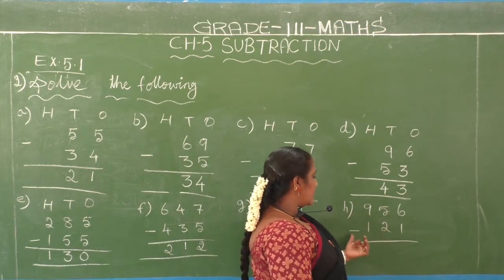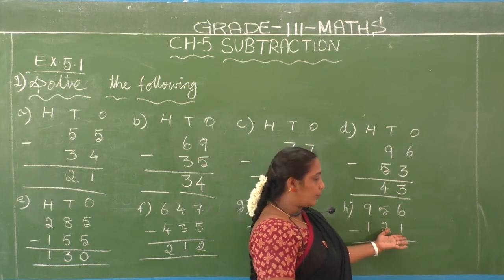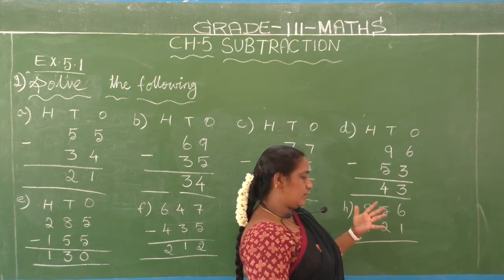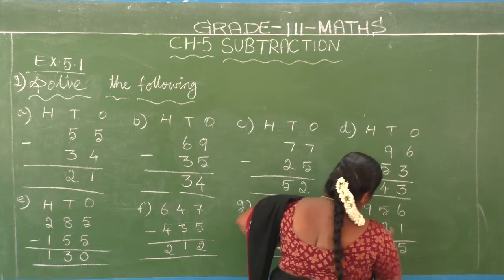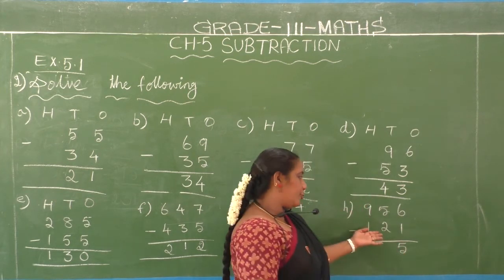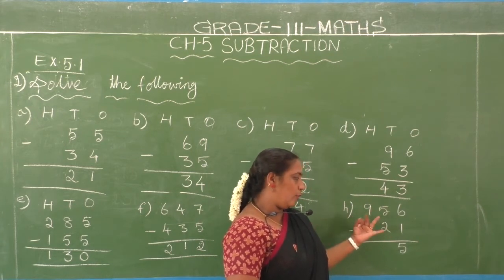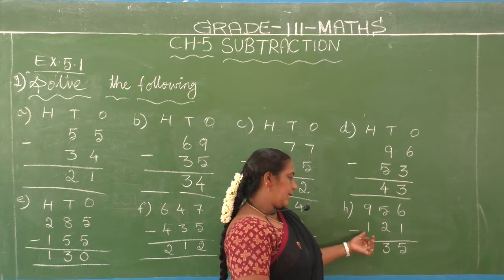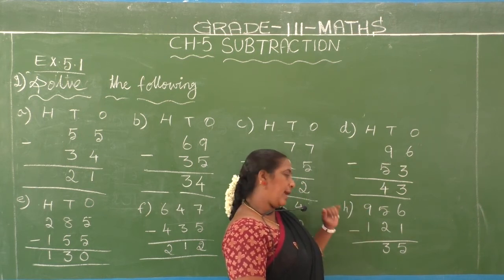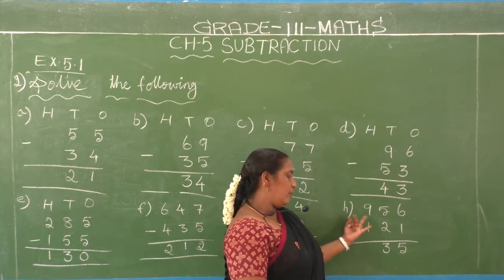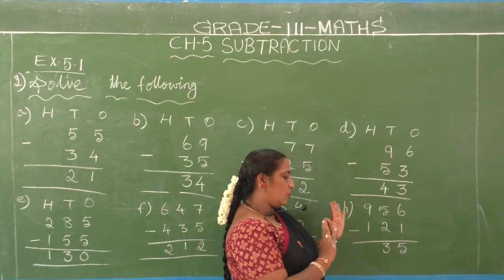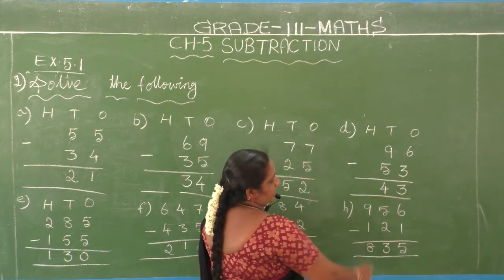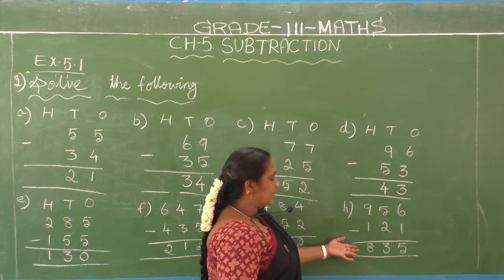H1: 956 minus 121. Ones place — second number is 1, first number is 6: 1 after 2, 3, 4, 5, 6. Difference is 5. Tens place — second number is 2, first number is 5: 2 after 3, 4, 5. Difference is 3. Hundreds place — second number is 1, first number is 9: 1 after 2, 3, 4, 5, 6, 7, 8, 9. Difference is 8. So 956 minus 121 equals 835.